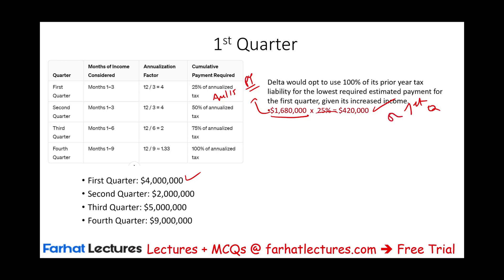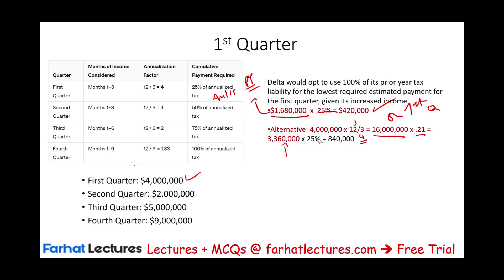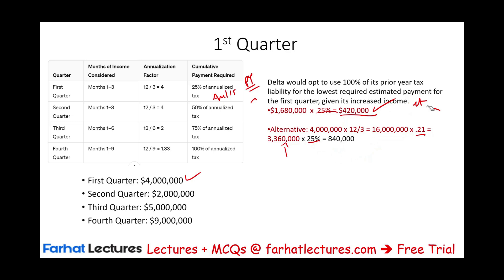Now let's look at the second quarter using the annualized method. The calculation for the second quarter is based on the first quarter, because the payment is due June 15th — before the quarter ends. We don't know the full second quarter yet, so we look at the first quarter income of $4,000,000. We take $4,000,000 × 4 = $16,000,000, then × 21% = $3,360,000 tax bill. At this point we're responsible for paying 50% total, which is $1,680,000, minus the $420,000 already paid. So we write a check for $1,260,000 for quarter two.